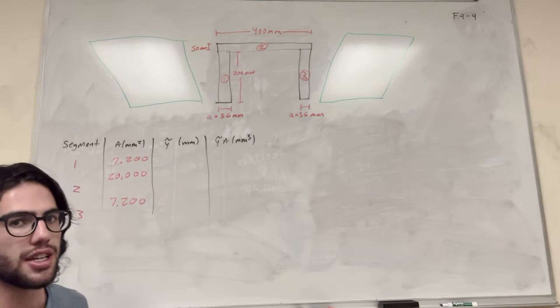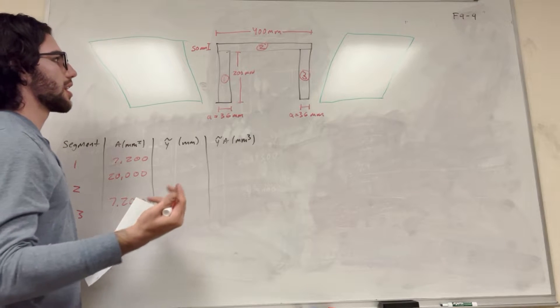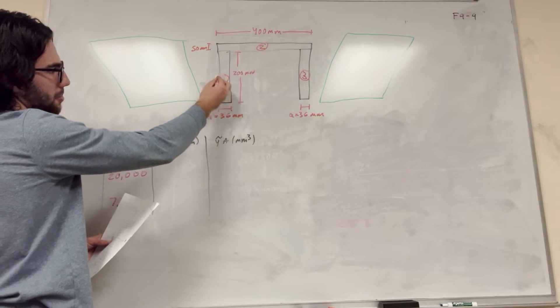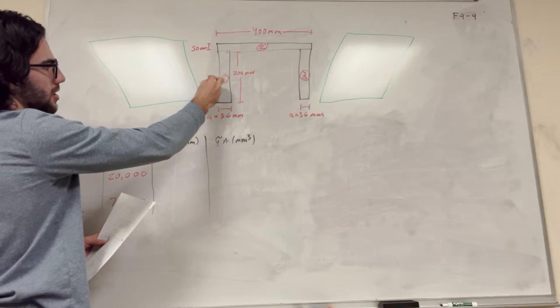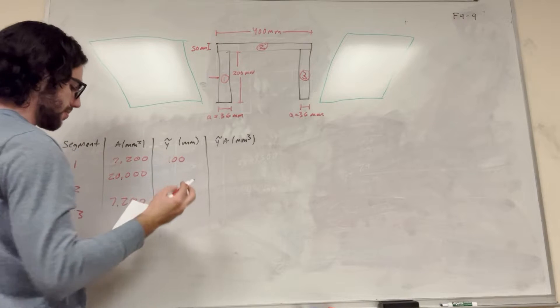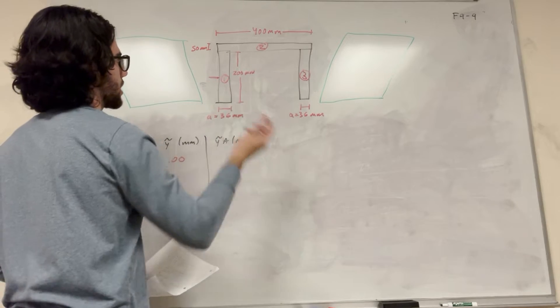So now we need to find the center mass of all of these. So finding a center mass of the rectangle is a lot easier than a table, for example. So center mass of segment 1 is just going to be halfway up. So it's going to be half of 200, which is just 100. Pretty simple. So then we know for segment 3 it's going to be the same, because segment 3 is very similar.